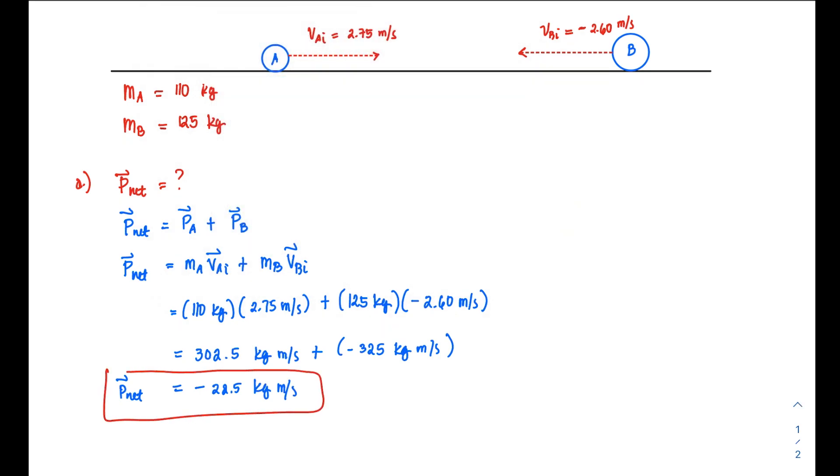We have to make sense of this result. The net momentum is negative, which means it's more likely to move towards the left after the collision. What I'm trying to say is: